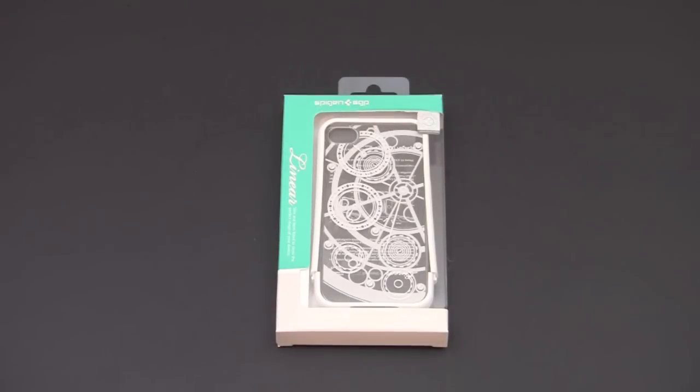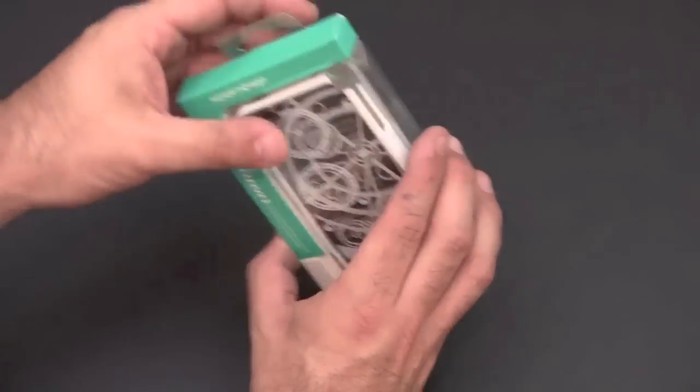Hey guys, it's Larry Greenberg and today we're going to take a look at the Spigen SGP Linear Clockwork Series case for the iPhone 4 and 4S. This sells for $27.99 and it comes in two color variations: you can choose from the champagne and gold version or the infinity white version. So let's crack open this packaging and find out what the Clockwork Series case is all about.